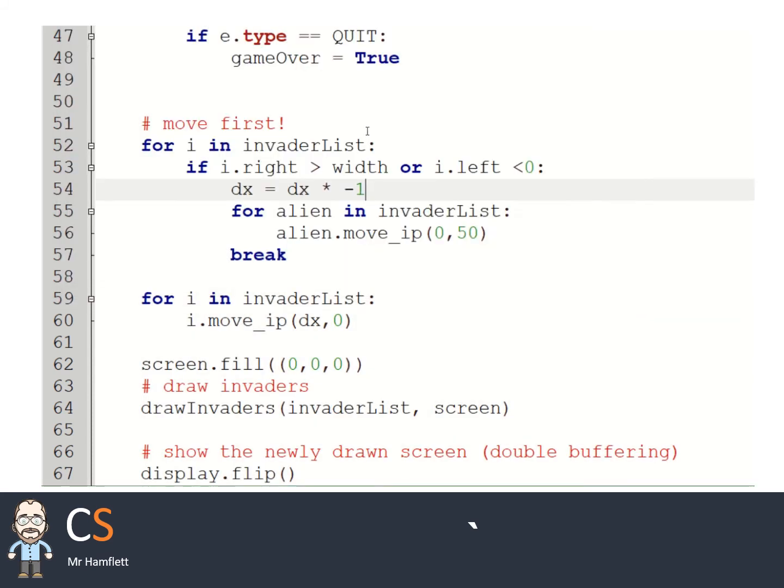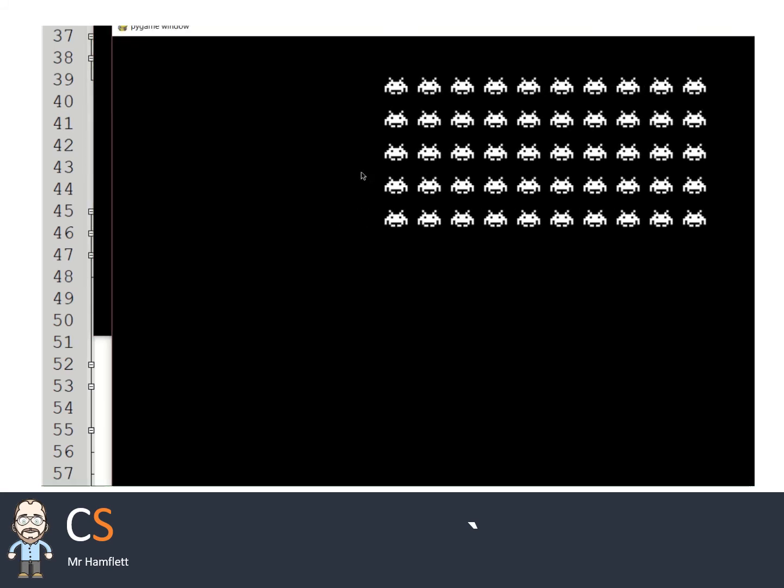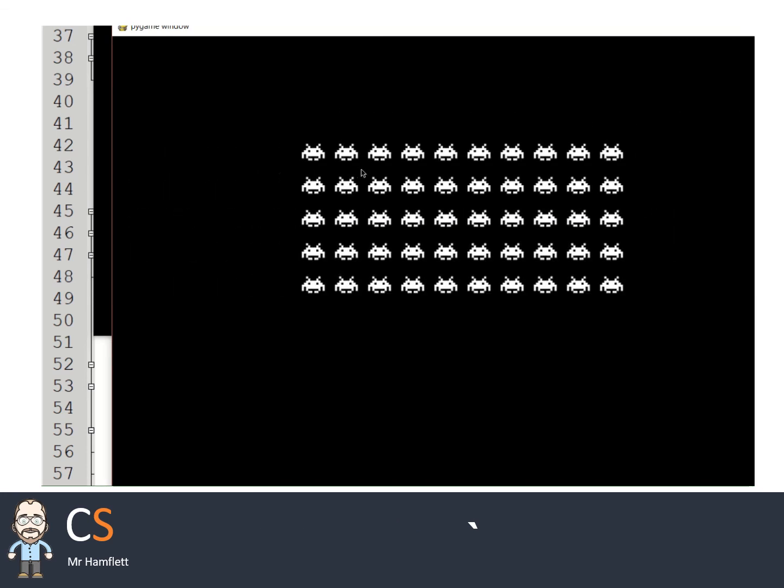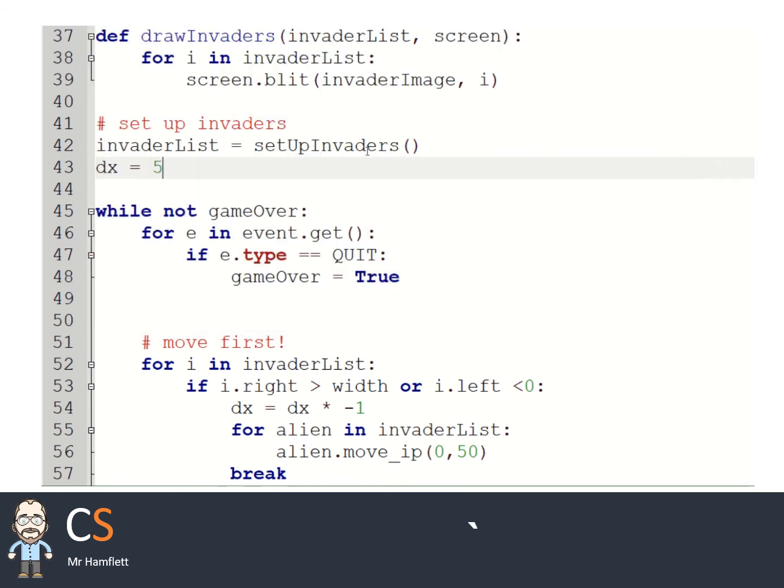Last couple of little points about the code. If you want the aliens to go faster, just set this number to be a bit bigger. Let's set that to be five. And you can see they go a lot faster. You can play around with those numbers and set it up in any way you want to.